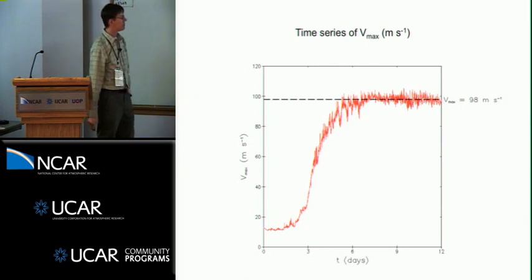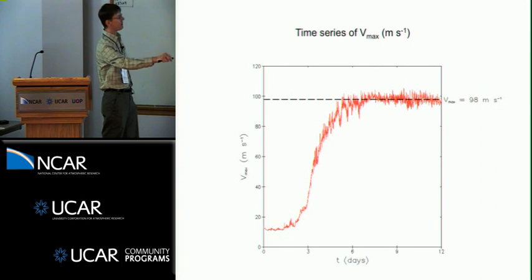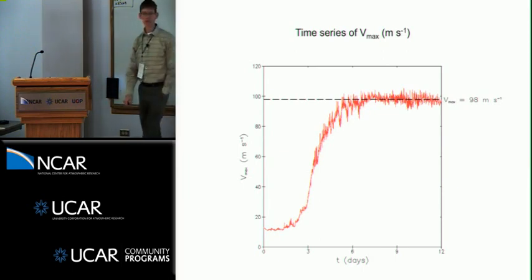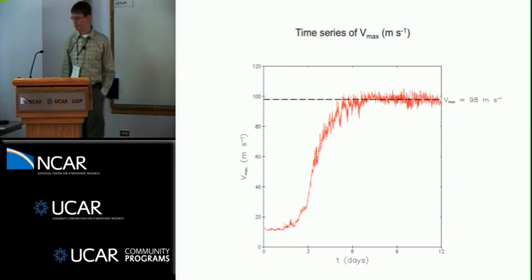When you moisten over a broad enough area, you get this period of rapid intensification, and then in this highly idealized environment you get a steady azimuthal velocity for a number of days. I just average over 8 to 12 days and this is the number I'm interested in. In this case it's 98 meters per second, the sustained maximum intensity from this numerical model.